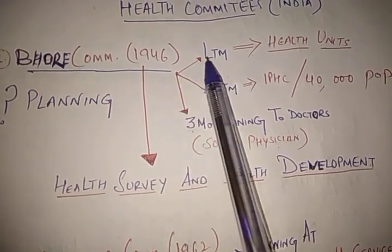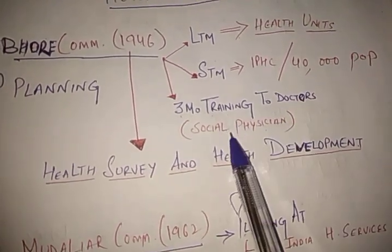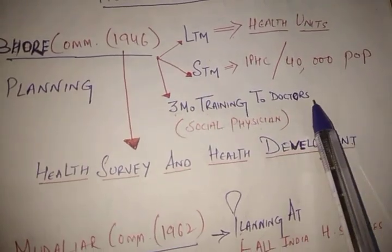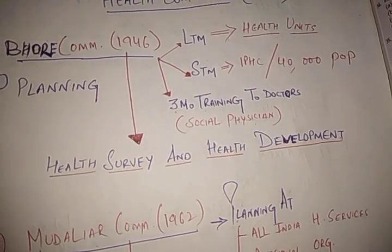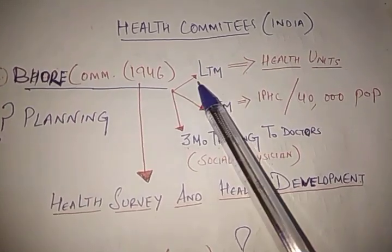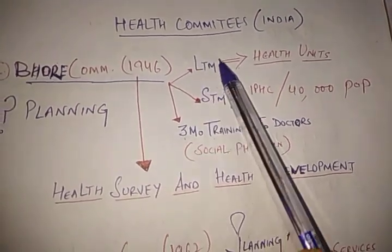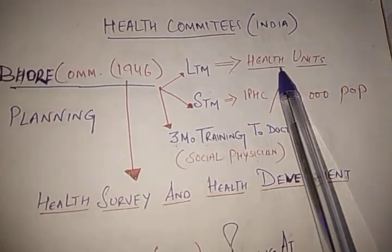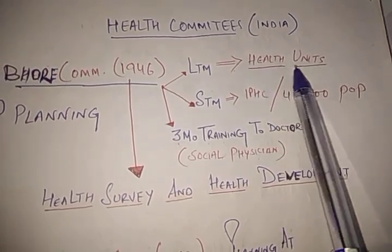The Bhore Committee put its recommendation to have long-term measures, short-term measures, and provision of three months training to MBBS doctors to make them social physicians, where MBBS doctors had to go to rural areas and study the environment and health of the rural people. The long-term measure is also called the Three Million Plan, which recommends creation of health units — primary, secondary, and regional health units.